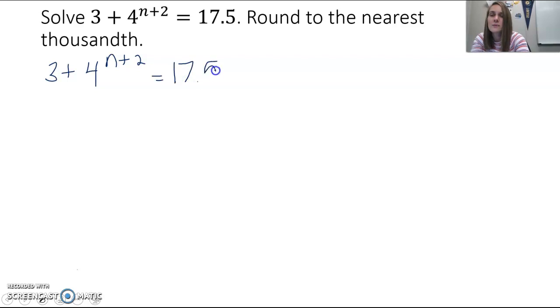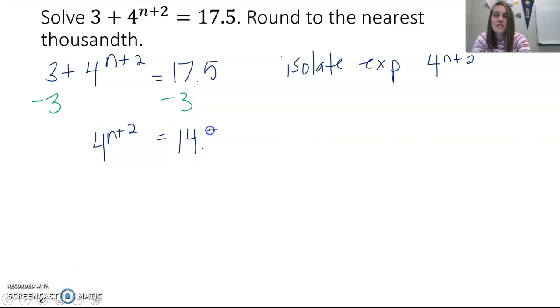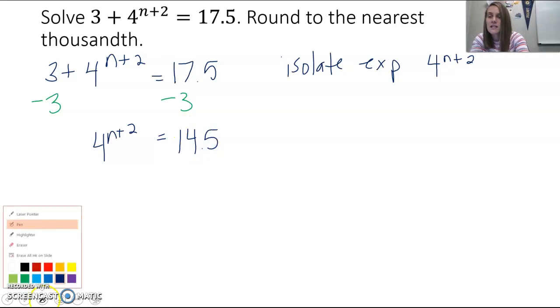Anytime we solve an exponential equation we need to isolate that exponential term, which is 4 to the n plus 2 power. To isolate that term I need to get rid of that 3 that's adding with it, so I subtract it. 3 minus 3 is 0. So I then have 4 to the n plus 2 power equals 17.5 minus 3, which gives us 14.5.